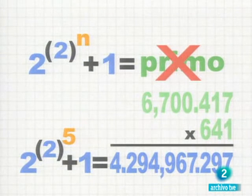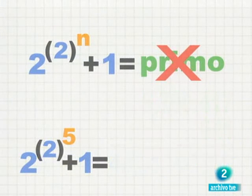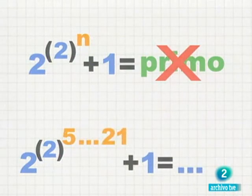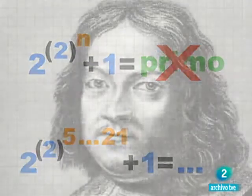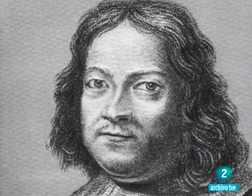En la actualidad, sabemos que la conjetura tampoco es cierta para ningún valor de n entre 5 y 21. Un gran fiasco para el casi siempre acertado visionario Fermat.